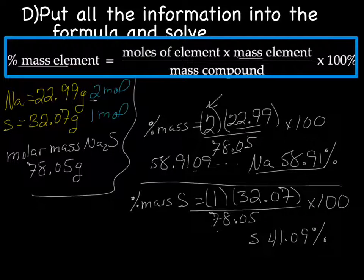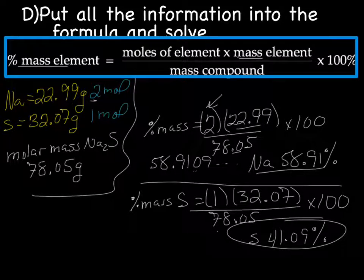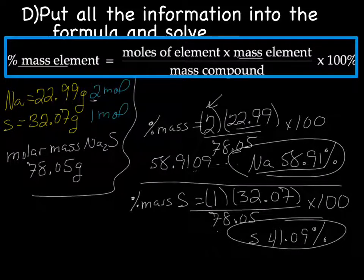Now, to make sure you did this right, if you add the two percentages up, they should add up to 100 or right about 100, taking rounding into account. So the mass of sulfur is 41.09 percent of the total mass of the compound, and the mass of sodium is 58.91 percent of the total mass of the compound. So that is how you solve for mass percent. It's actually not that difficult. It looks like a lot of steps, but it's actually pretty basic.